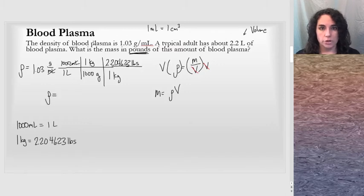You can go ahead and run this through your calculator, and you will get that there are 2.271 pounds in one liter of blood plasma.